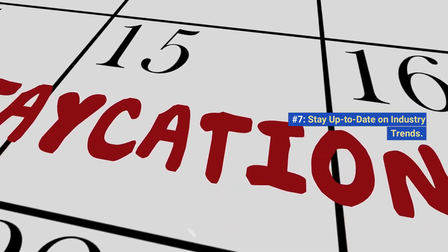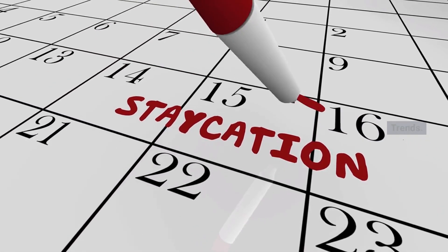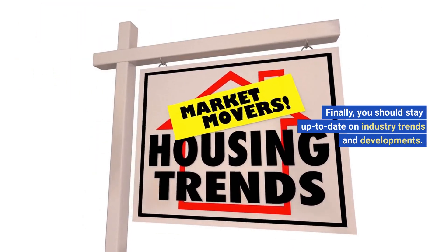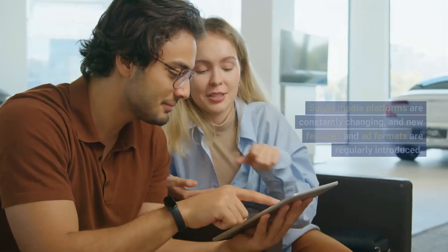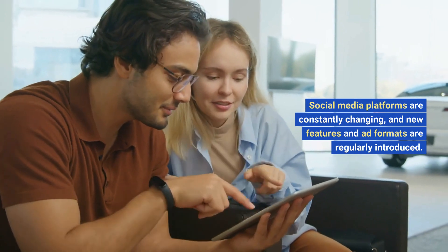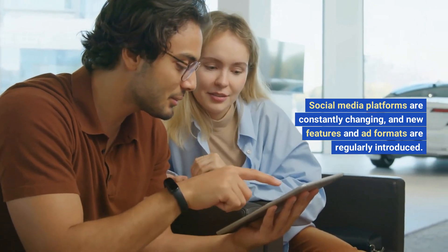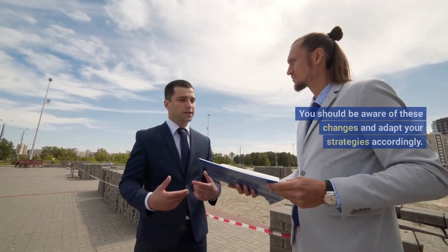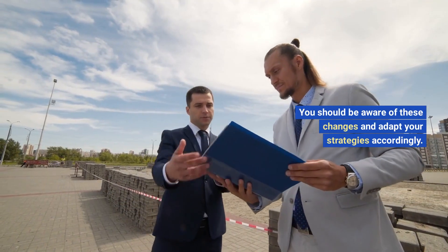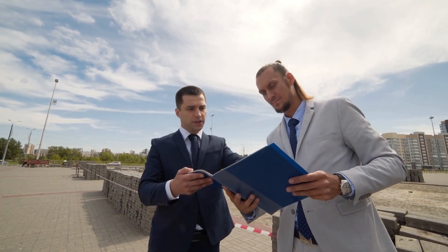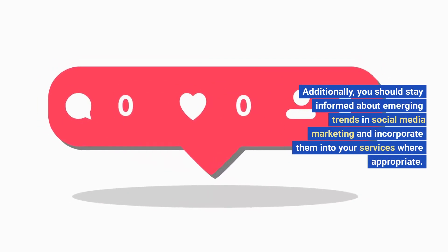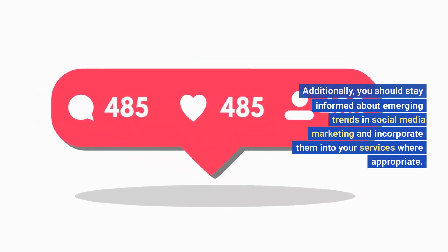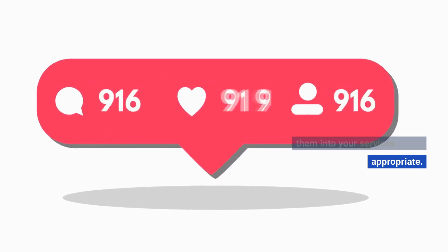Number seven: stay up to date on industry trends. Finally, you should stay up to date on industry trends and developments. Social media platforms are constantly changing, and new features and ad formats are regularly introduced. You should be aware of these changes and adapt your strategies accordingly. Additionally, you should stay informed about emerging trends in social media marketing and incorporate them into your services where appropriate.